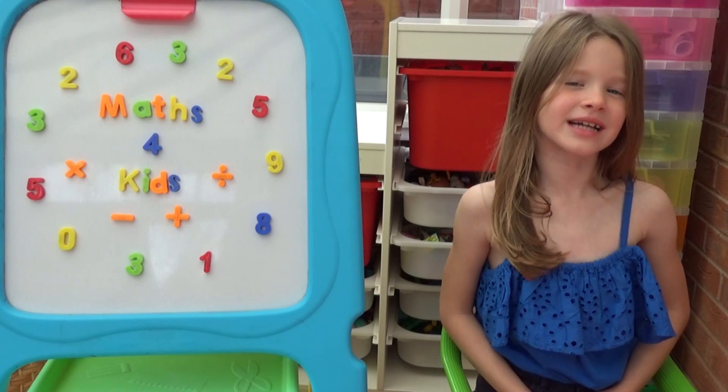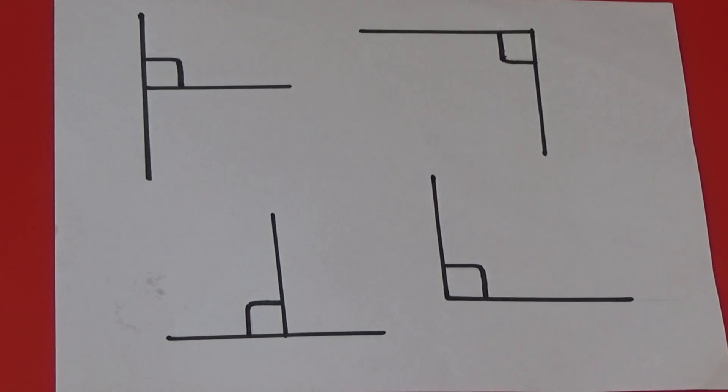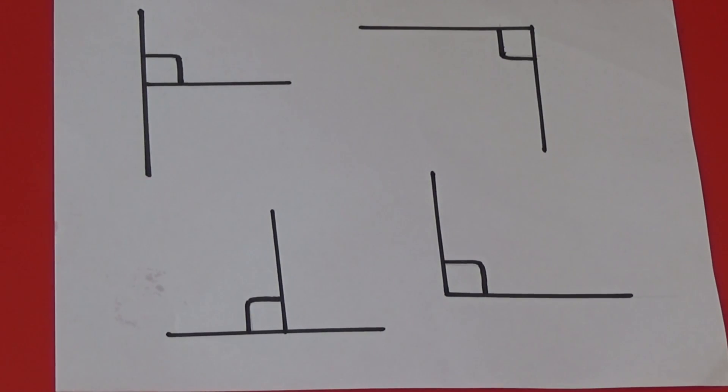The next thing we're going to look at are perpendicular lines. This is where two lines meet at a right angle.